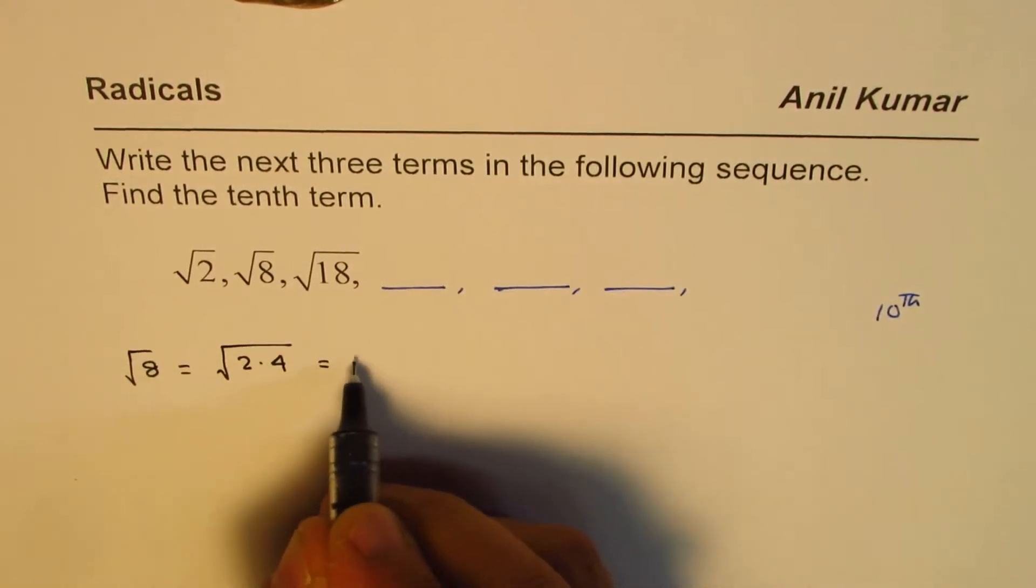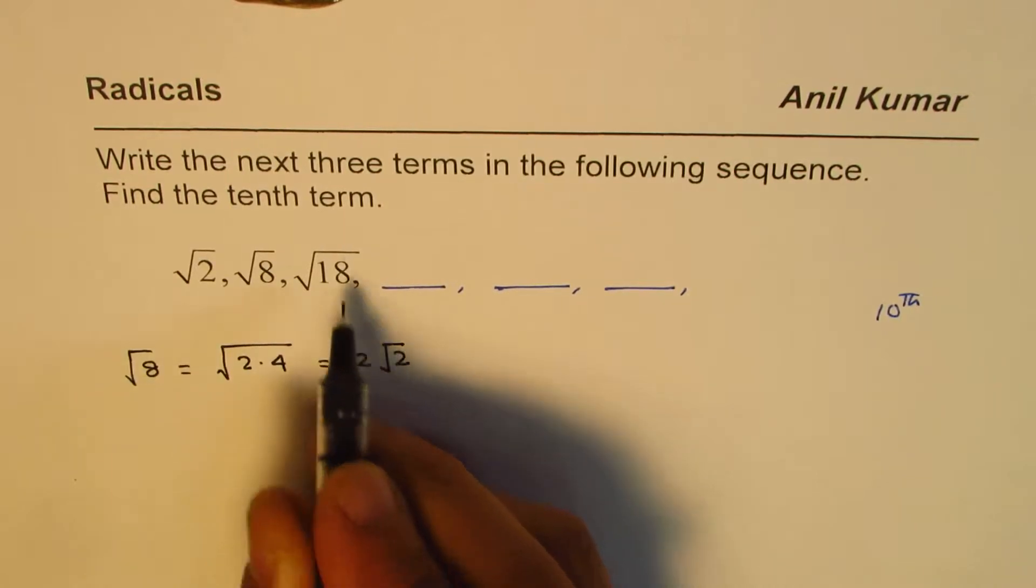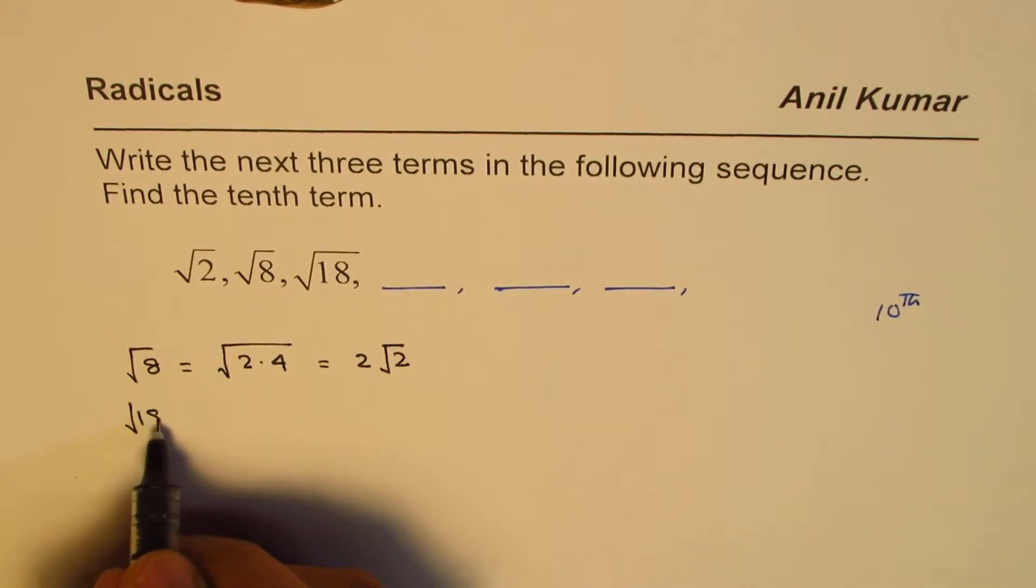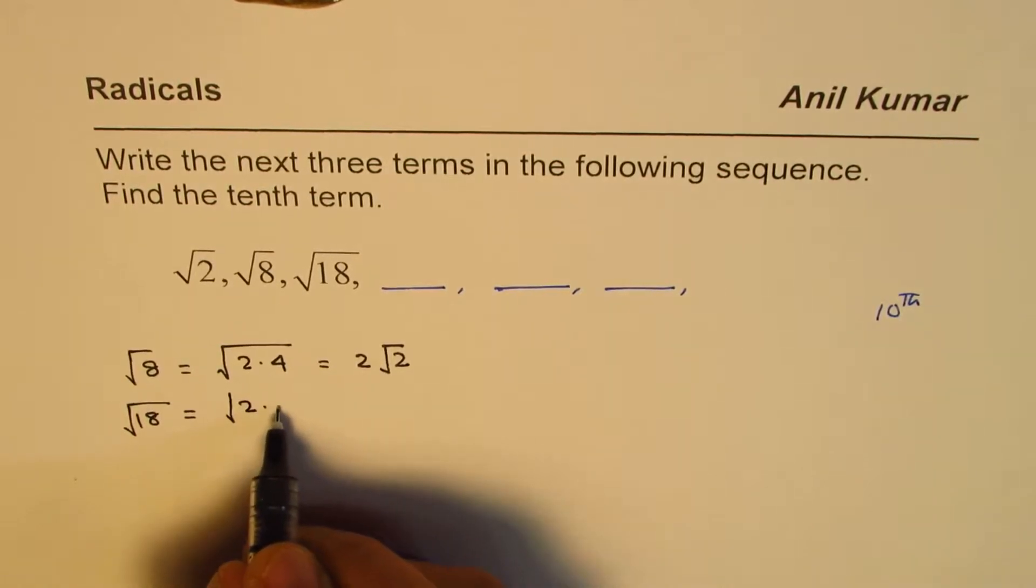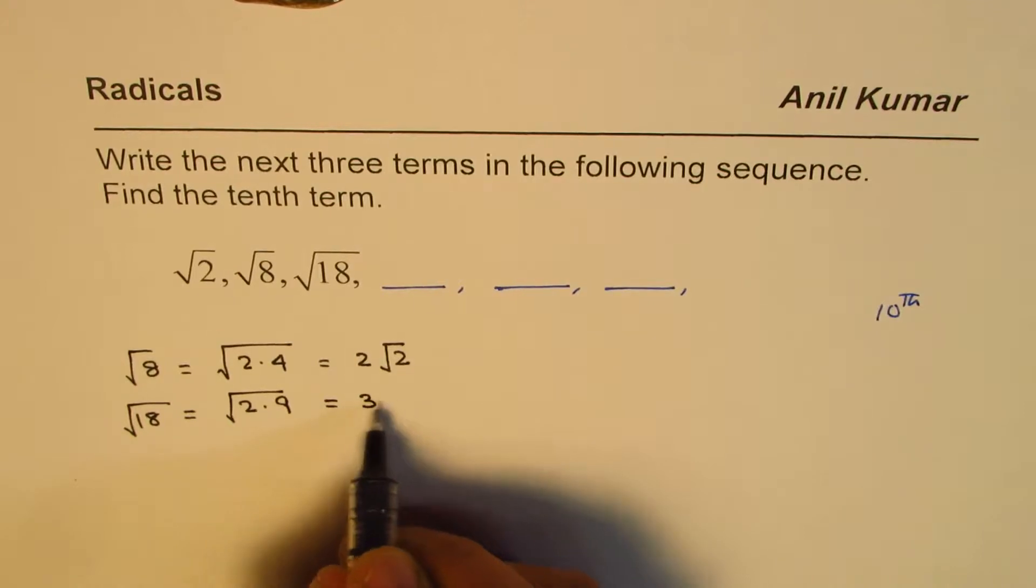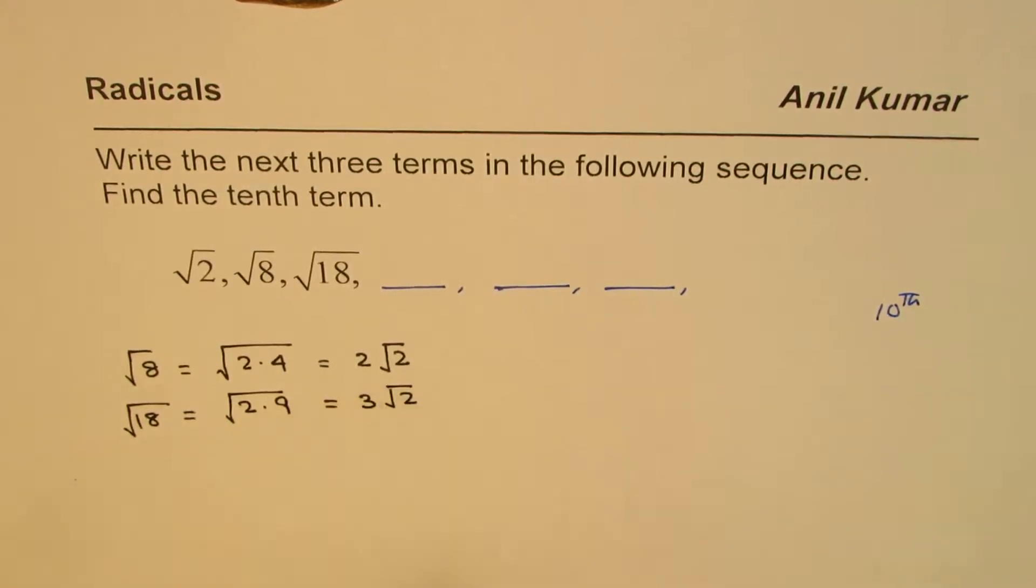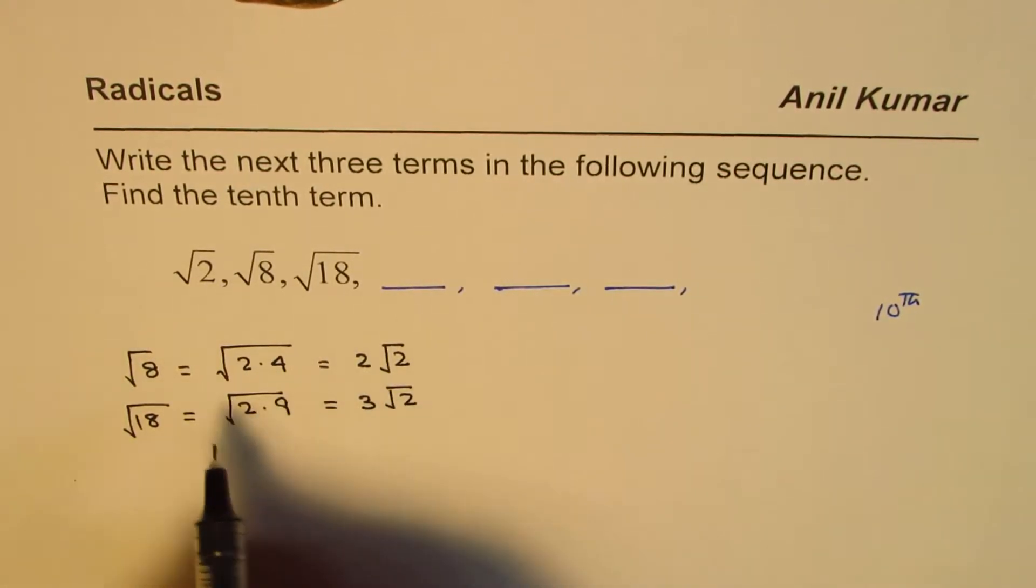Square root of 18 can be written as square root of 2 times 9, and that is 3 square root of 2. So we can rewrite this sequence as square root of 2, 2 square root of 2, and 3 square root of 2.